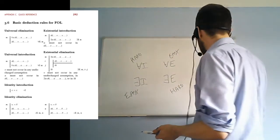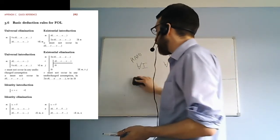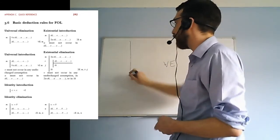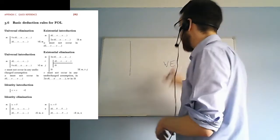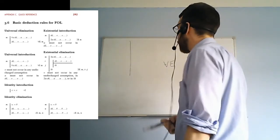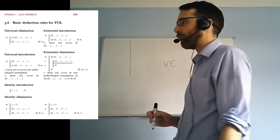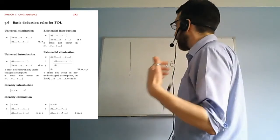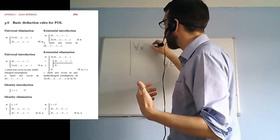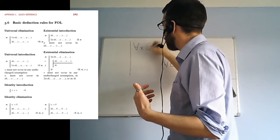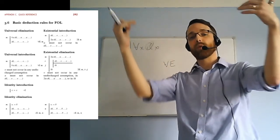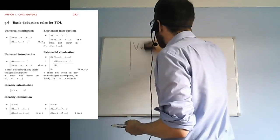Let's start with universal elimination — that's our easy rule. The idea behind an elimination rule is that it takes you from some premise or earlier line that has a universal quantifier and gets you to something with one fewer universal quantifier. The thing that was there before gets eliminated. This rule is answering the question: suppose I know something universally quantified — what can I learn from that?